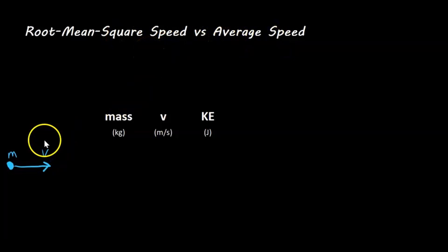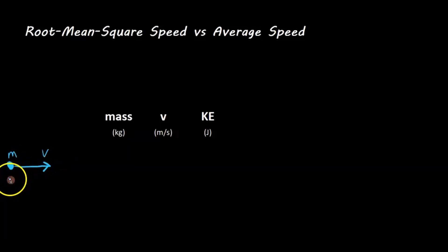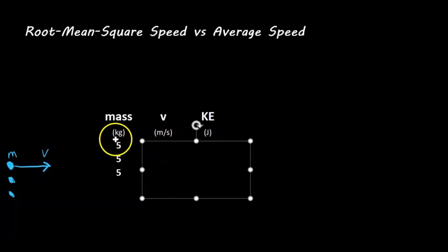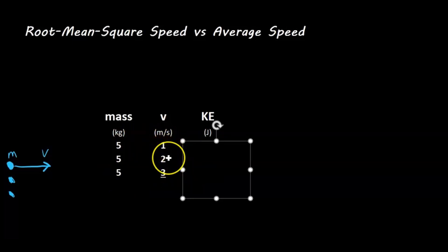I'm going to go through an example here. Imagine we have an object of mass m — just like a ball or something — and it's moving with speed v. We don't care about the direction. Let's say we have three of these masses, all moving at their own different speeds. Each mass is 5 kilograms: the first is moving at 1 m/s, the second at 2 m/s, and the third at 3 m/s.